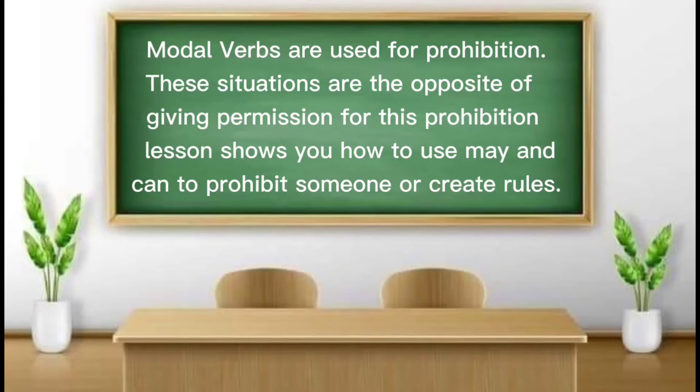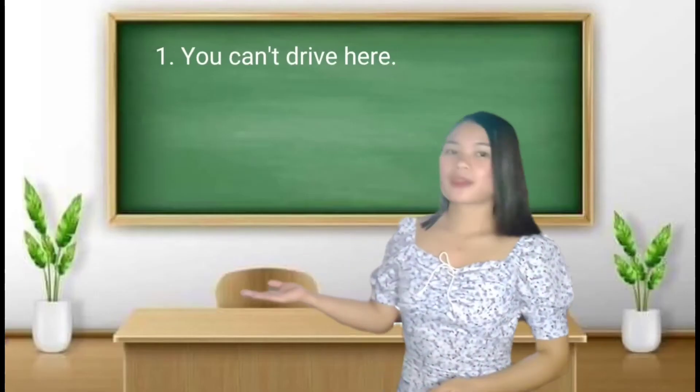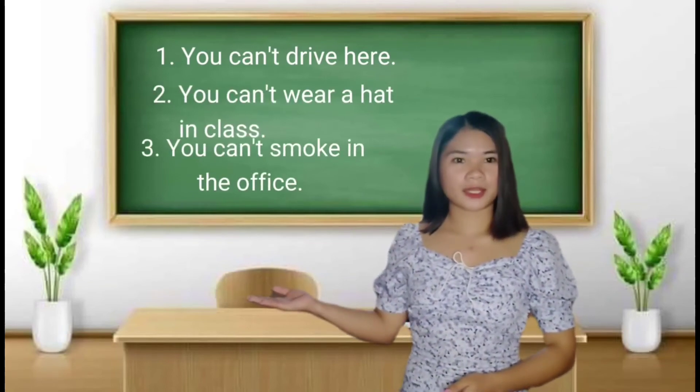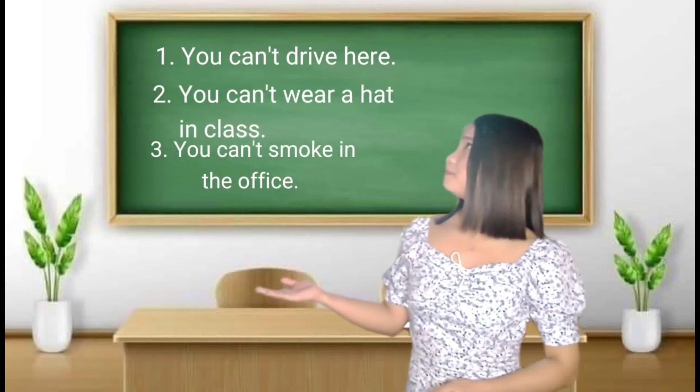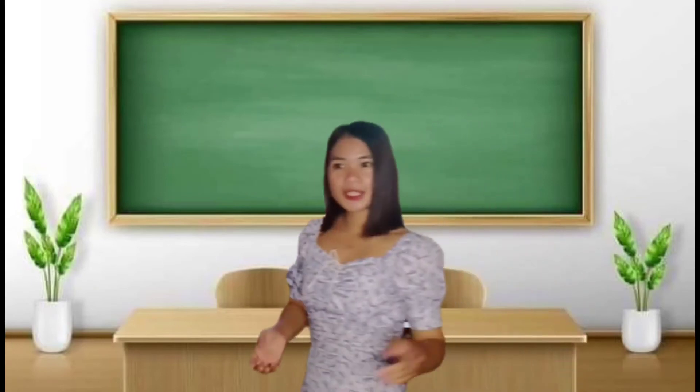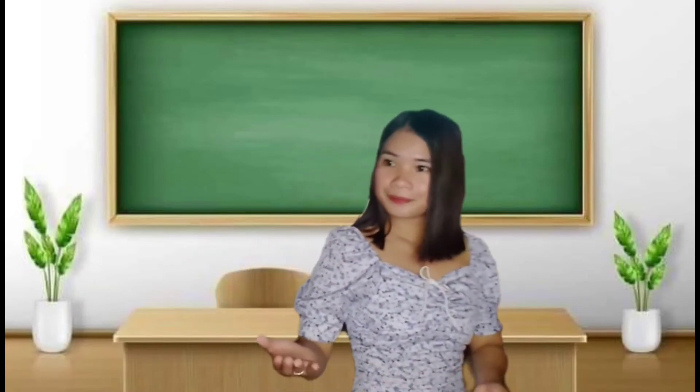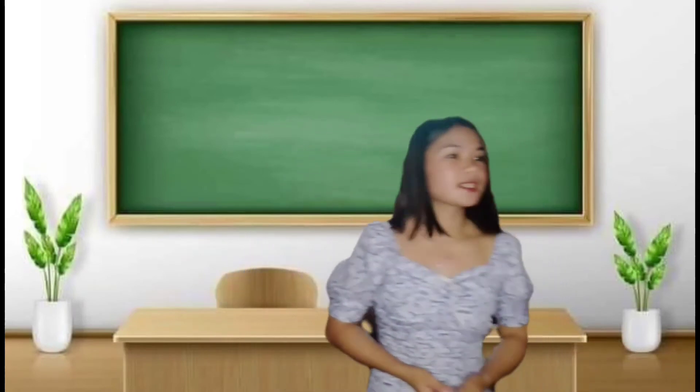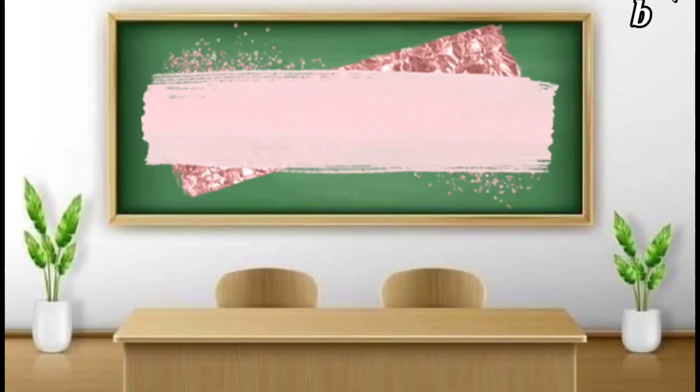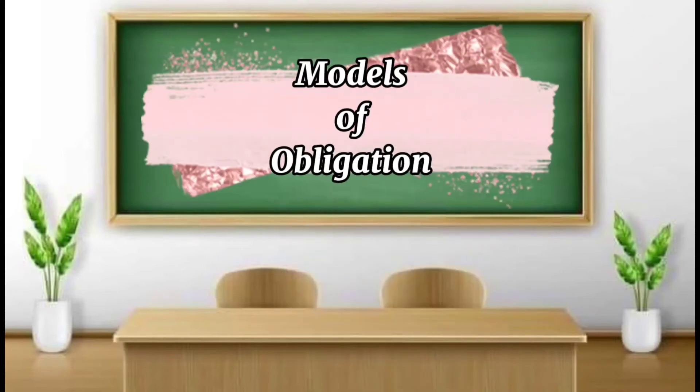Modals of prohibition. Modal verbs are used for prohibition. These situations are the opposite of giving permission. This modal verb for prohibition lesson shows you how to use may and can to prohibit someone or create rules. Now, I have here examples of modals of prohibition. From the class, can you give me an example of a sentence with modals of prohibition? Yes, Jane? Yes, that's correct.